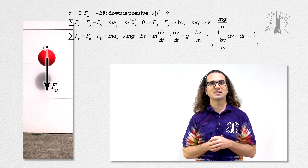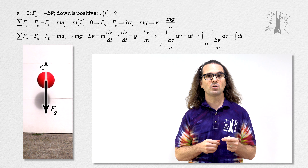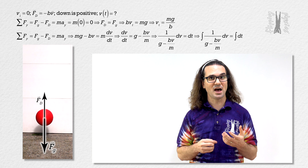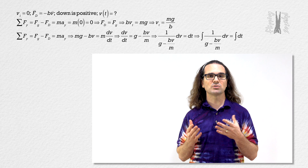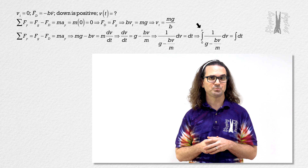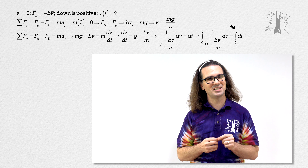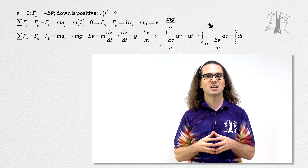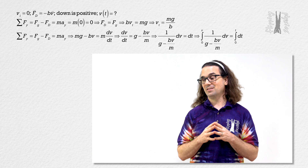Now we can take the integral of both sides of the equation. On the left-hand side, we are taking the integral with respect to velocity. On the right-hand side, we are taking the integral with respect to time. Let's use a definite integral because we know the initial velocity equals zero — it starts from rest. Let's let the final velocity equal v, the initial time equal to zero, and the final time equal to t. That way we are solving for velocity v as a function of time t. Who has ideas about how to integrate these equations?